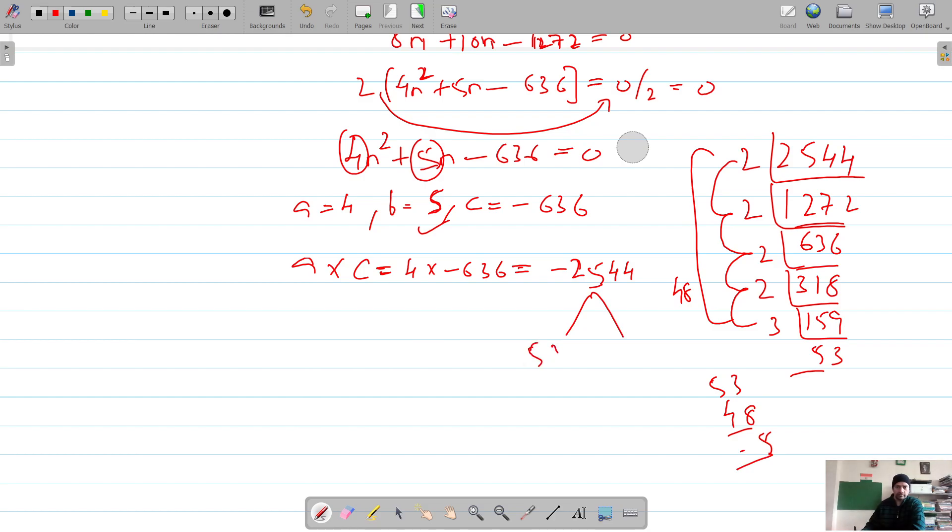So we have our factors 53 and 48. You can also solve this using the quadratic formula if you want, but I'm going to solve it using the factorization method. So this is how I factorized it and got the factors. So 53, because this one, the middle term has the positive sign, so I will put positive for the larger one and negative for the smaller one. So 53 into minus 48 is minus 2544, and 53 minus 48 gives me 5, which is the middle term. So these are my factors.